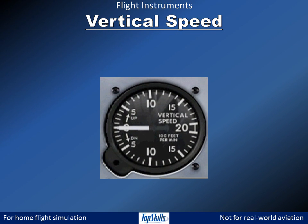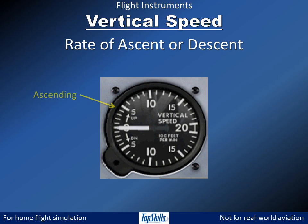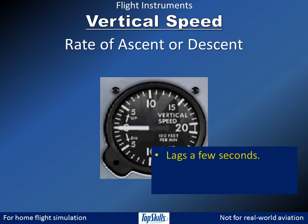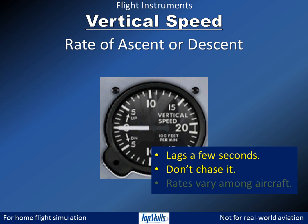The vertical speed indicator shows the aircraft's rate of ascent or descent in hundreds of feet per minute. It shows zero when the aircraft is maintaining a steady altitude. It lags a few seconds because of how it reads changes in air pressure. Pilots are therefore advised not to chase the needle. The optimum rate of ascent or descent varies among aircraft.